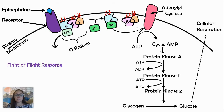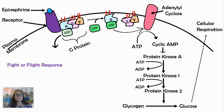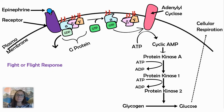Epinephrine is a hormone that travels through the entire body through the bloodstream. Depending on the target cell, it will have different cell responses. Not every cell has a receptor for epinephrine, and not every cell that receives it will have the same cell response. But what is the same is that intracellularly — inside the cell — this pathway relies on proteins working correctly.